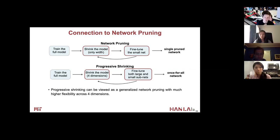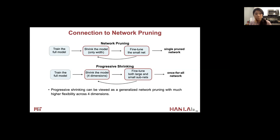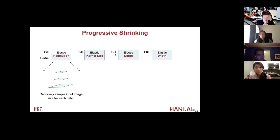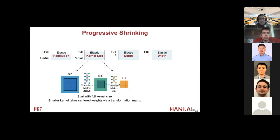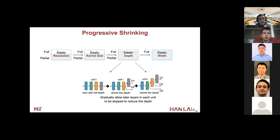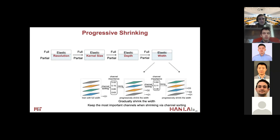Progressive shrinking can be viewed as a generalized network slimming process with much higher flexibility — it not only shrinks the width dimension, but also the depth, kernel size, and resolution dimensions. For the resolution dimension, we randomly sample the input image size for each batch throughout training. For the kernel size dimension, we start with the full kernel size, then support smaller kernels by taking centered weights in the large kernel via a transformation matrix. For the depth dimension, we gradually allow later layers in each unit to be skipped. For the width dimension, we keep the most important channels according to the L1 norm when shrinking the width.